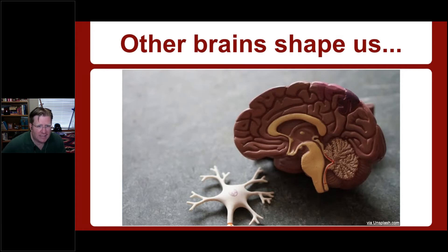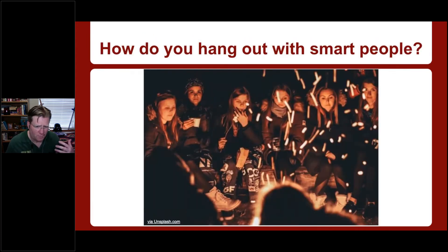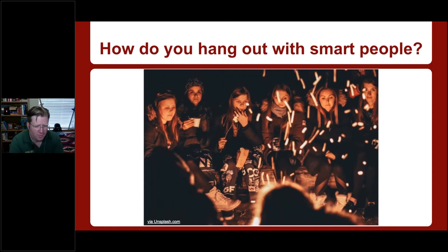Other brains shape us. We want to hang out with people who are doing things better than we are, who have a more advanced understanding of ideas we want to appropriate. The challenge is: how do you do that? It used to be that we had to be physically present together. But now, because I'm sharing this on YouTube and putting it out on Anchor as a podcast, you could be literally anywhere on the planet with internet connectivity and be learning with this information.